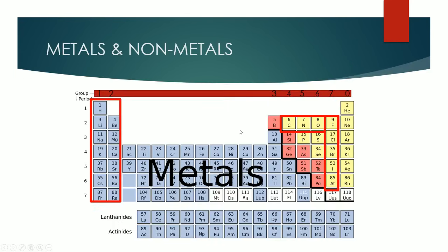So this is a periodic table. We took a brief look at this in the previous video, but basically it organizes all the elements that we know of in a single table. What's really important is that it organizes elements into groups, and the groups are basically columns — column 1, column 2, column 3, column 4, column 5, and so on.